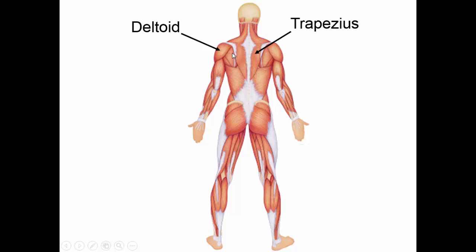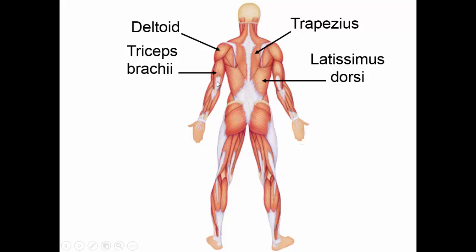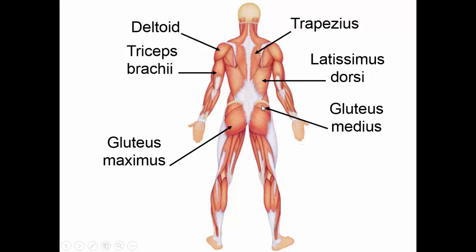Here you see the deltoid from the back. The trapezius is this large, kite-shaped muscle that helps you pull your shoulders back and keeps your head erect. The latissimus dorsi is the large muscle that wraps around your side — it helps you extend your upper arm and draw your arm across your back. The triceps brachii is the large muscle on the back of your arm that helps you extend your arm at the elbow. The gluteus maximus is the large muscle of your hip that helps you extend your leg and medially rotate it. The gluteus medius is a smaller muscle that helps you abduct your leg and laterally rotate it. The hamstrings is a group of three muscles that helps you flex your knee and extend your thigh.